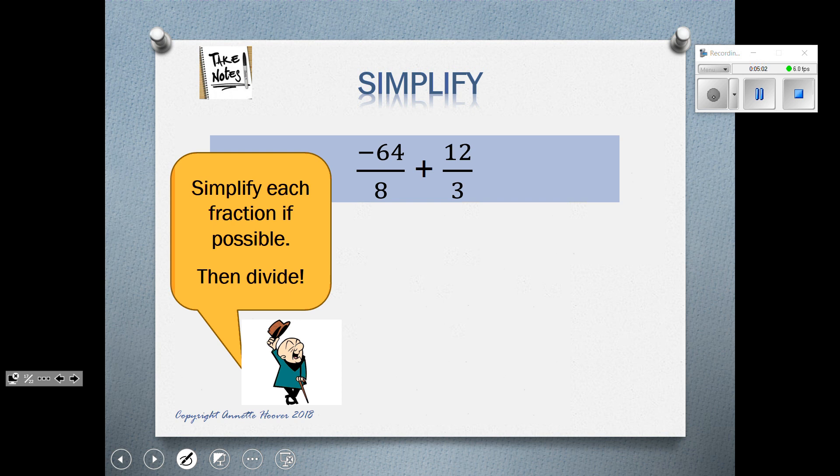And 12 divided by 3 is 4. So now we just have negative 8 plus a positive 4, and remember our song, same signs add and keep, different signs subtract. So 1 is negative, 1 is positive, we subtract and keep the sign of the greater value, so the answer is negative 4.